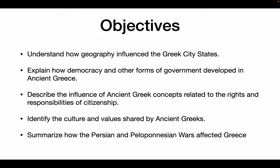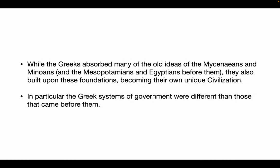Hello everyone, this is going to be 5.2, the Greek city-states. Our objectives here: we're going to understand how geography influenced the Greek city-states, explain how democracy and other forms of government developed in ancient Greece, describe the influence of ancient Greek concepts related to rights and responsibilities of citizenship, identify the culture and values shared by ancient Greeks, and summarize how the Persian and Peloponnesian wars affected Greece. All of that in one lecture.